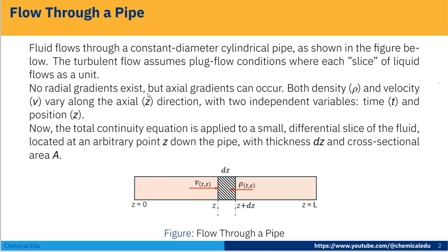The assumption is no radial gradient exists but axial gradients can occur. Both density ρ and velocity v vary along the axial z direction. We have two independent variables: time t and position z.